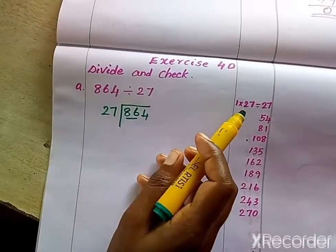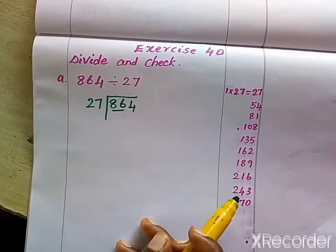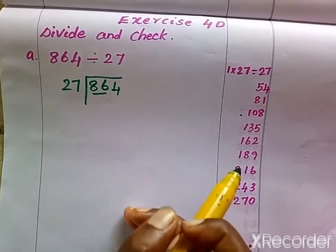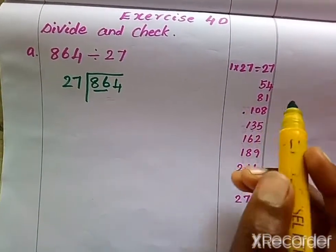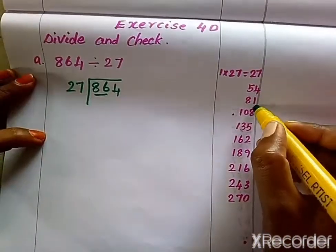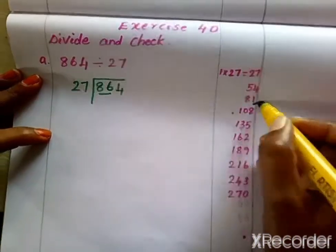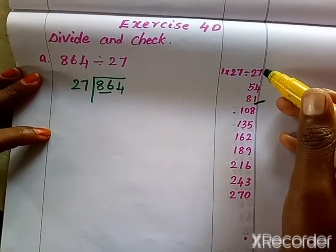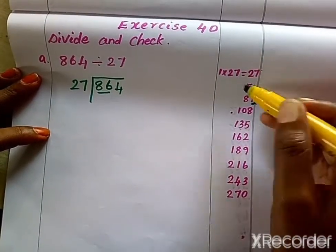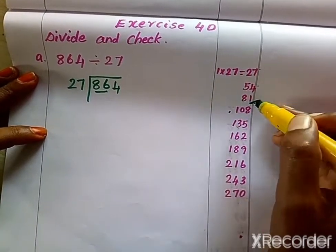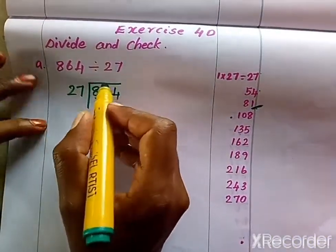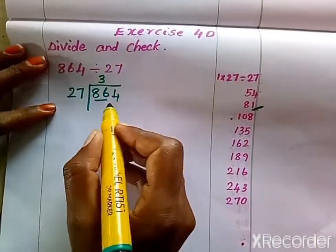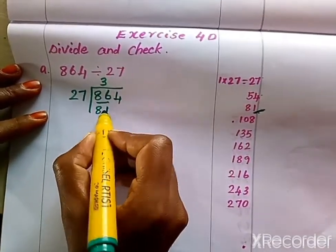Now we have to check whether 86 is in the 27 times table. We don't have 86, so what is the number less than 86? We have 81. At what times do we get 81? 3 into 27 gives us 81, so we write 3 as the quotient and 81 below.